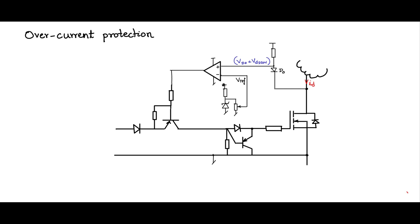When the comparator output goes high and I connect it to this point, the PNP transistor is switched off. The moment this switch is off, there is no drive to the MOSFET. The MOSFET will discharge through this PNP transistor and will turn off. So whenever there is an overcurrent, VDS(ON) acts as the sensor - it shoots up beyond the reference value, makes the comparator op-amp output go high, switches off the series switch element, and cuts off the drive. This is the principle on which overcurrent protection operates.